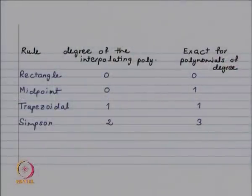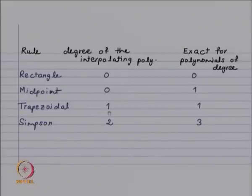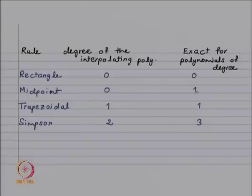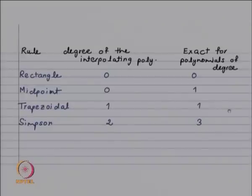For the rectangle rule, the degree of the interpolating polynomial was 0 and you got exact results for polynomials of degree 0. For the trapezoidal rule, it was degree 1 in both cases. For the midpoint rule, the degree of the interpolating polynomial was 0 and you had exactitude for linear polynomials. For Simpson's rule, a quadratic polynomial was interpolated and we got exactitude for cubic polynomials.